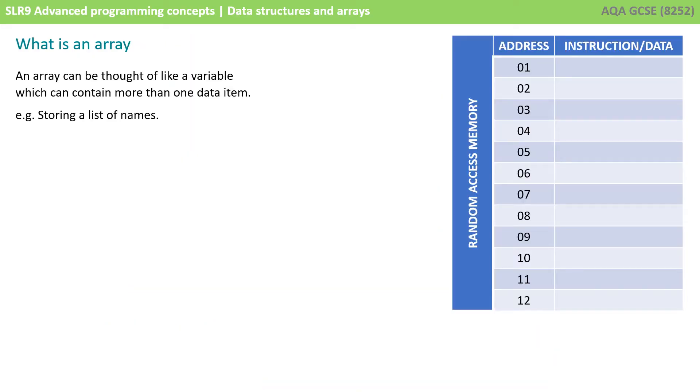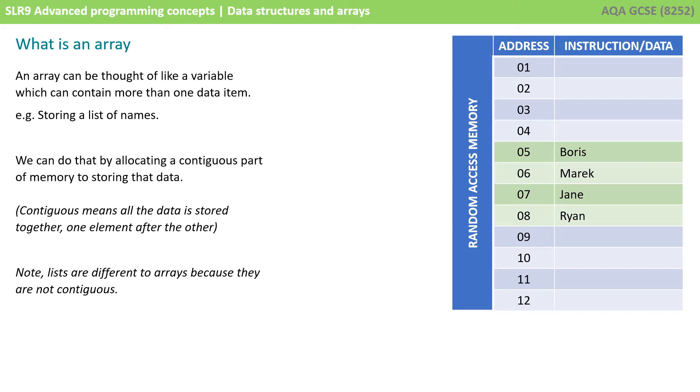So, an array can be thought of like a variable which can contain more than one data item. For example, we could be storing a list of names. And we can do that by allocating a continuous part of memory to storing that data. So, you can see here we have a number of memory locations in memory, and starting at memory address 5, we've then started storing contiguously a list of names, which will be part of our variable.